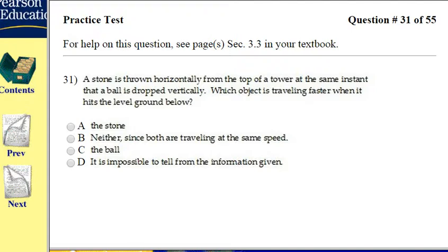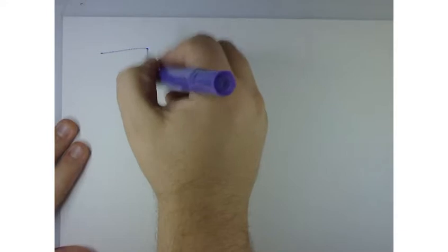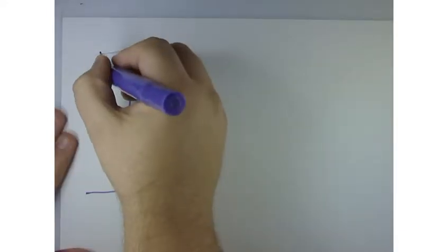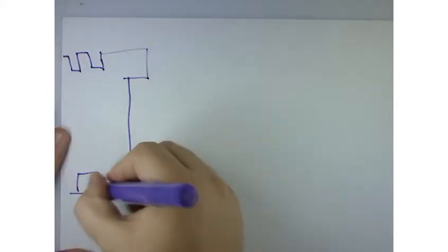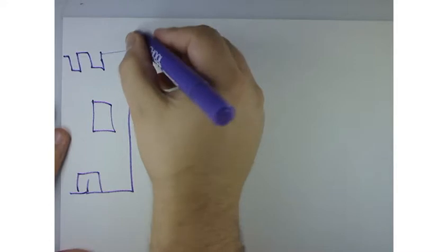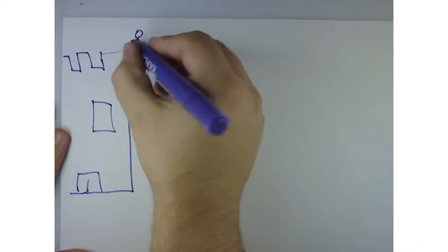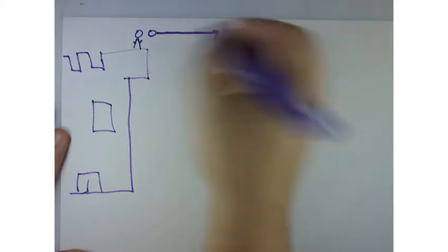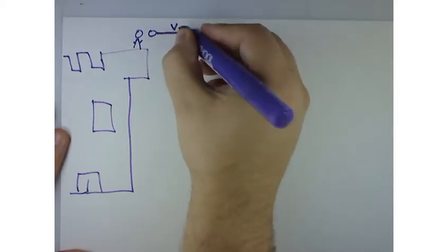Now, before we do that, what I want you guys to think about is I've got this tower. It's a castle. All right, and I've got this guy up here, and he throws the stone. It has a velocity in the X direction.